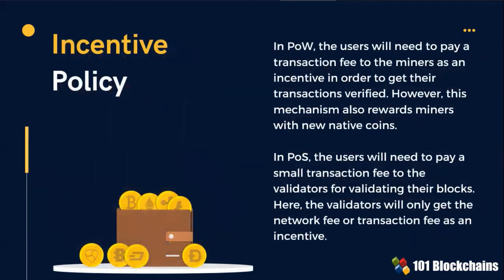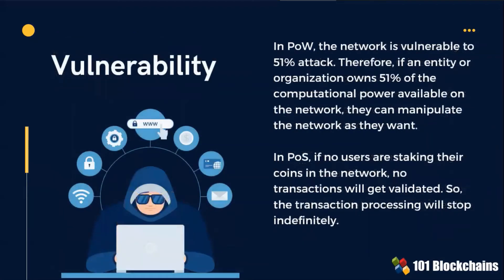Regarding the incentive policy: in Proof-of-Work, miners will get the transaction fee and new coins as an incentive for their work. In Proof-of-Stake, the validators will only get a small transaction fee as an incentive. Regarding vulnerability: in Proof-of-Work, the network is vulnerable to a 51% attack. In Proof-of-Stake, if no users stake their coins in the network, no transactions will get validated.